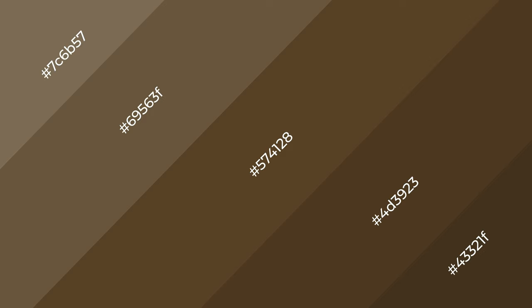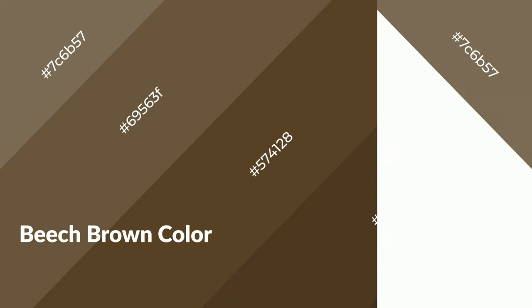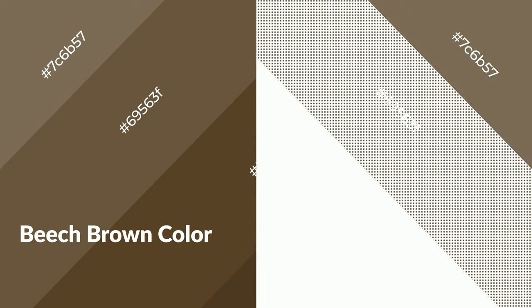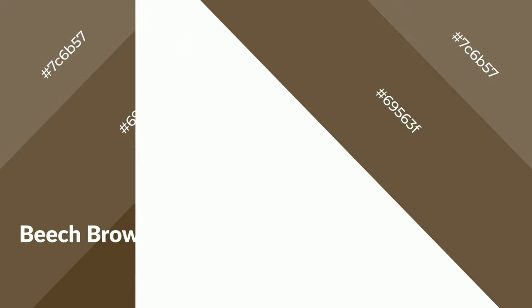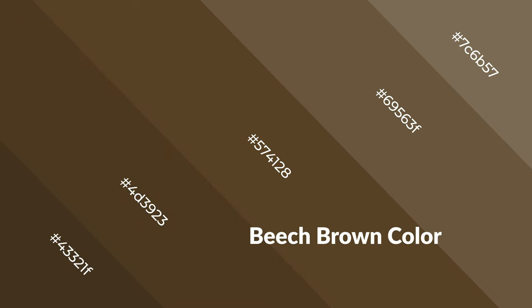Beach brown is a warm color and it emits cozier and active emotions. Warm colors are symbols of warmth, fire, heat, and sunshine. It also evokes joy, passion, love, and even anger. You can see them used in restaurants and gyms.